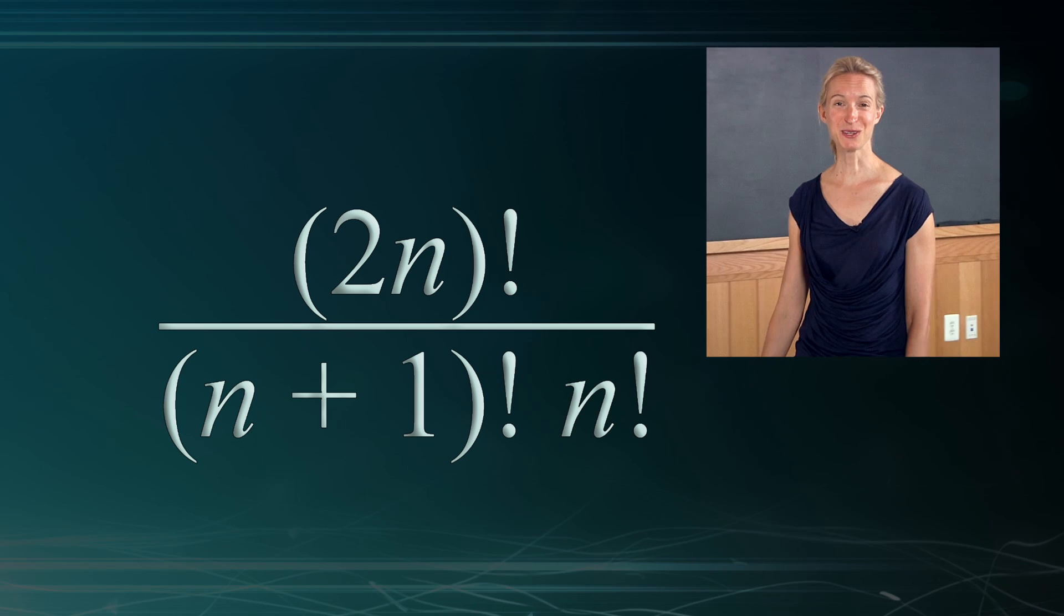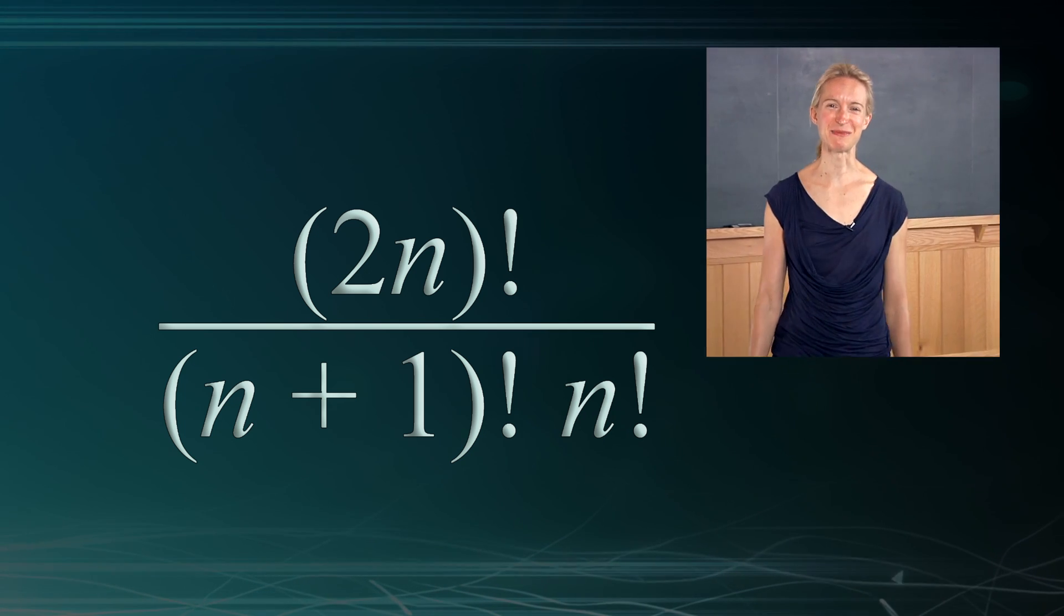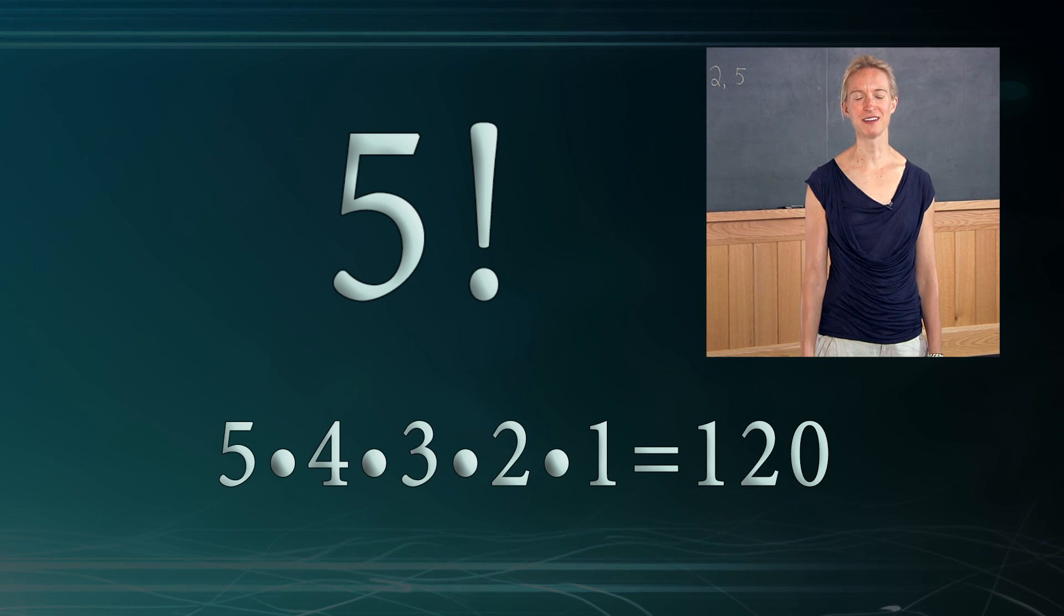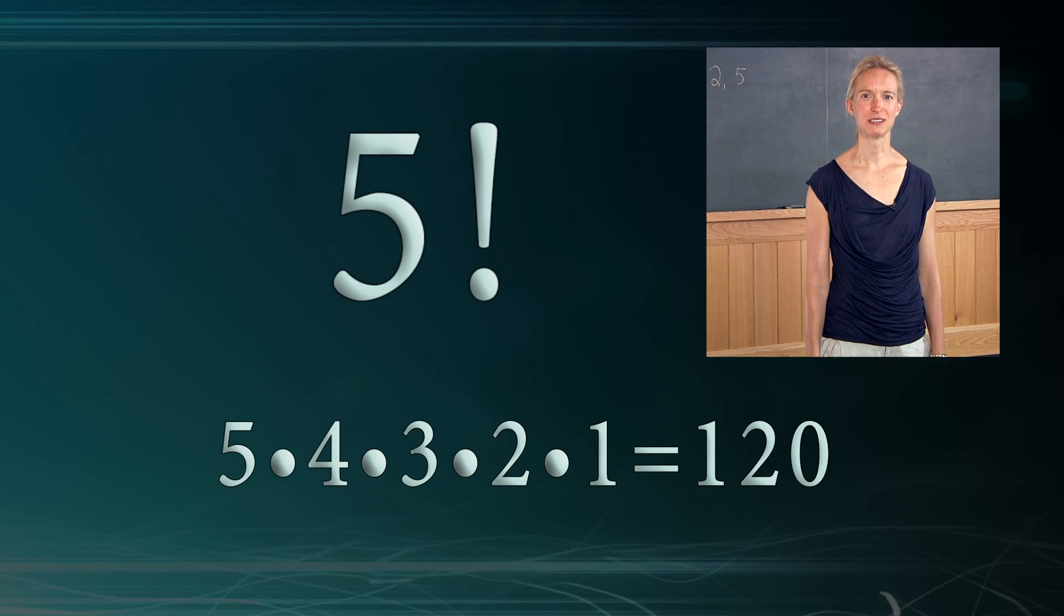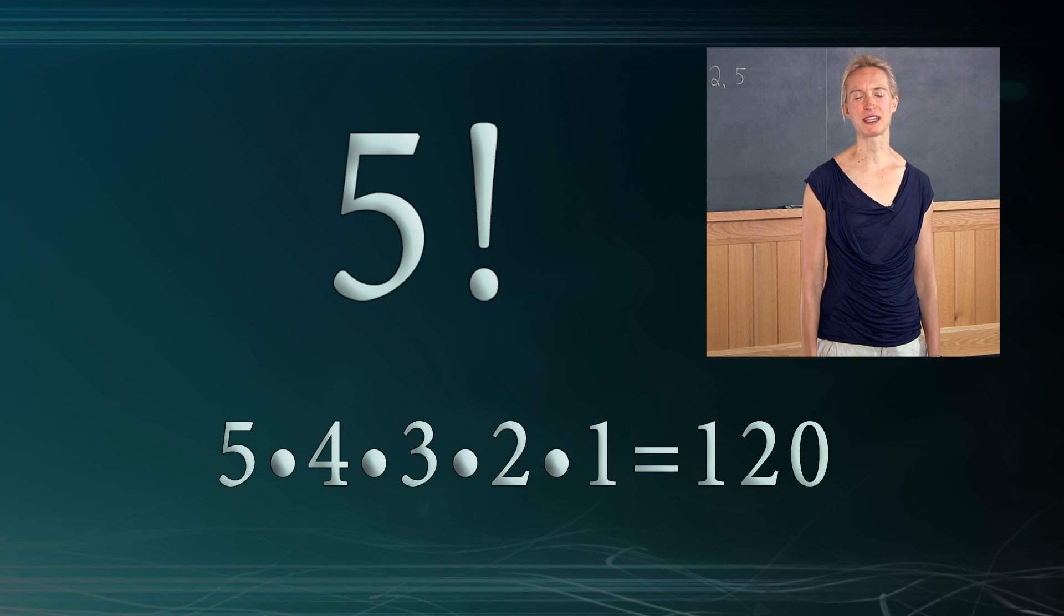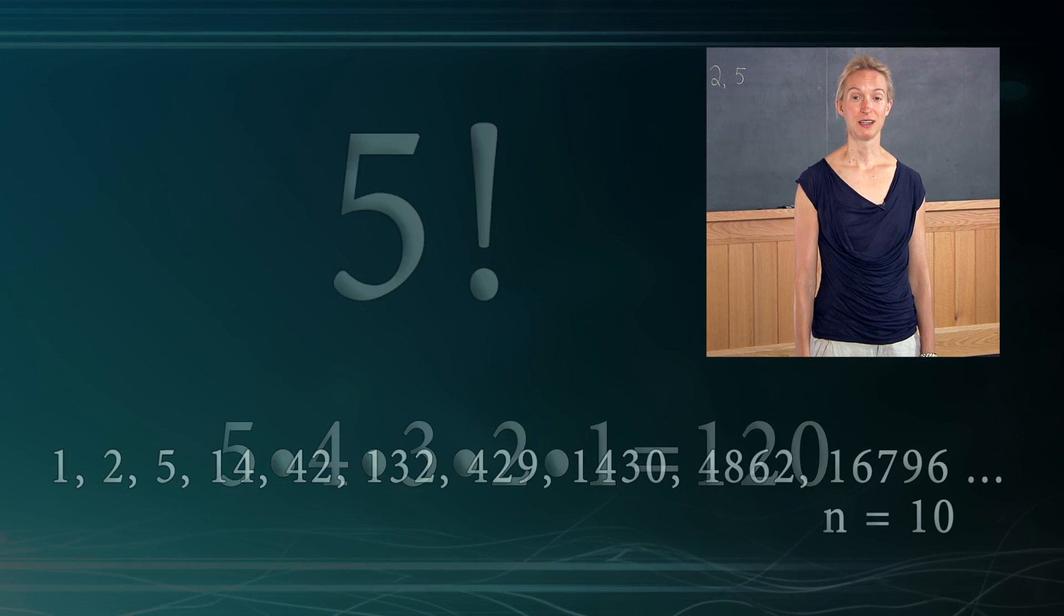So that exclamation point isn't expressing enthusiasm, it's giving us a way to form a product. So for example, 5 factorial is 5 times 4 times 3 times 2 times 1. We start with the number, we multiply it by the counting numbers before it.